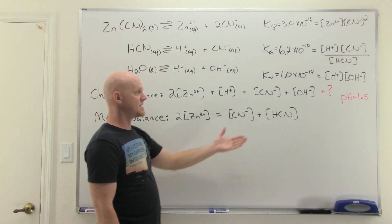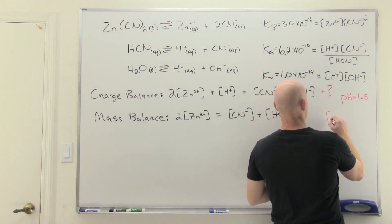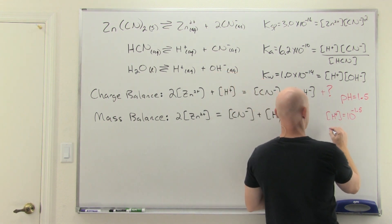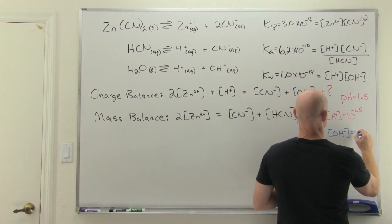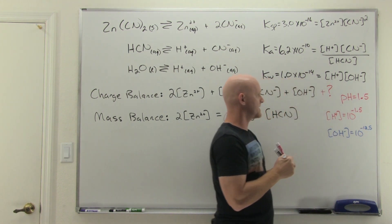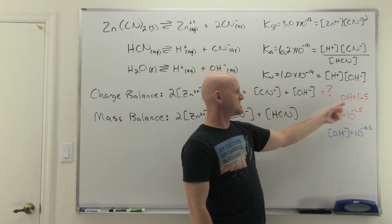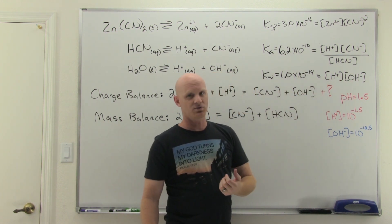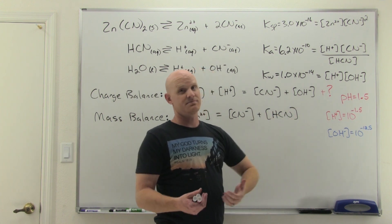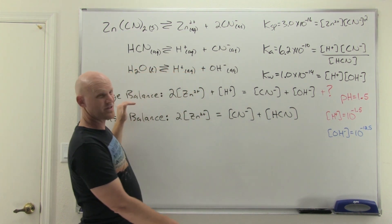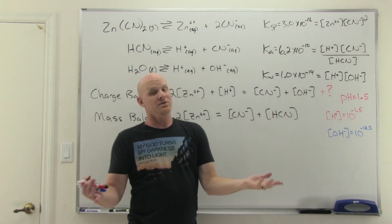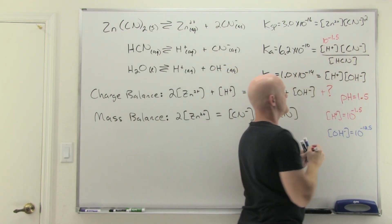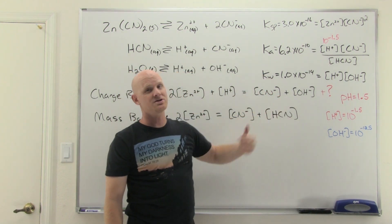A couple of other things we know: we're given that the pH is 1.5, which is convenient. That means the H⁺ concentration is 10 to the negative 1.5, and the OH⁻ concentration is 10 to the negative 12.5. Don't forget these two have to multiply to give 1 times 10 to the negative 14. Since the pH was given, we know H⁺, and since we have the Kw value we can figure out hydroxide as well. We're not going to be able to use the charge balance since it was incomplete, so we'll leave it alone.